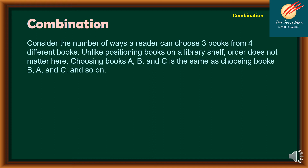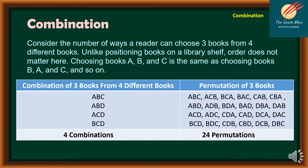Let's have the table. We have the combination of three books from four different books. We have here A-B-C, A-B-D, A-C-D, and B-C-D. So meaning to say, we have only four combinations.